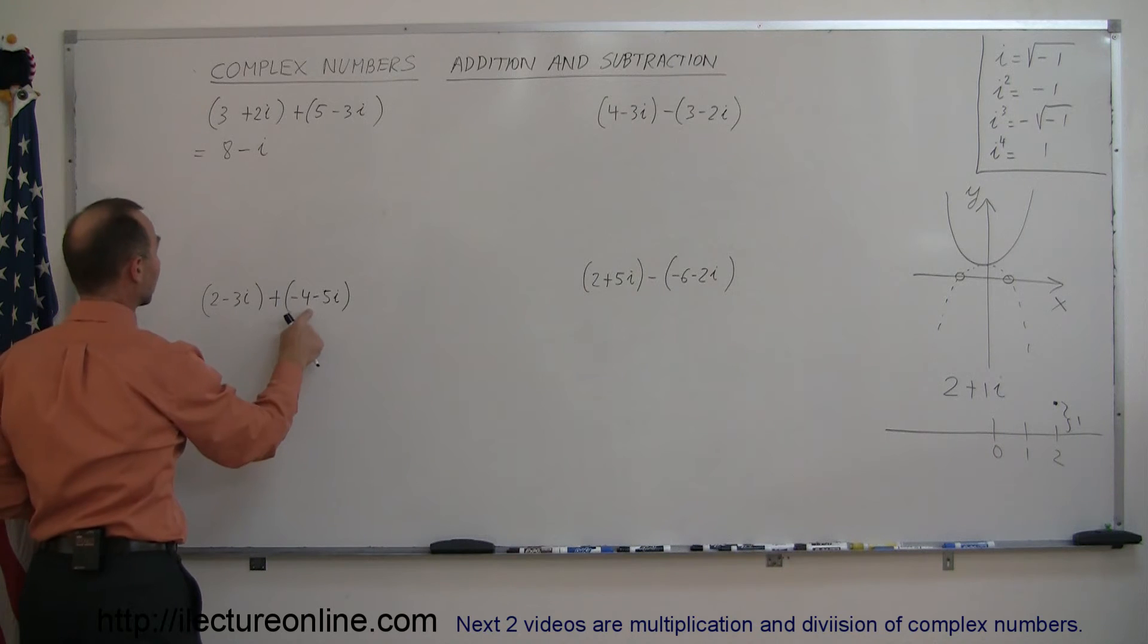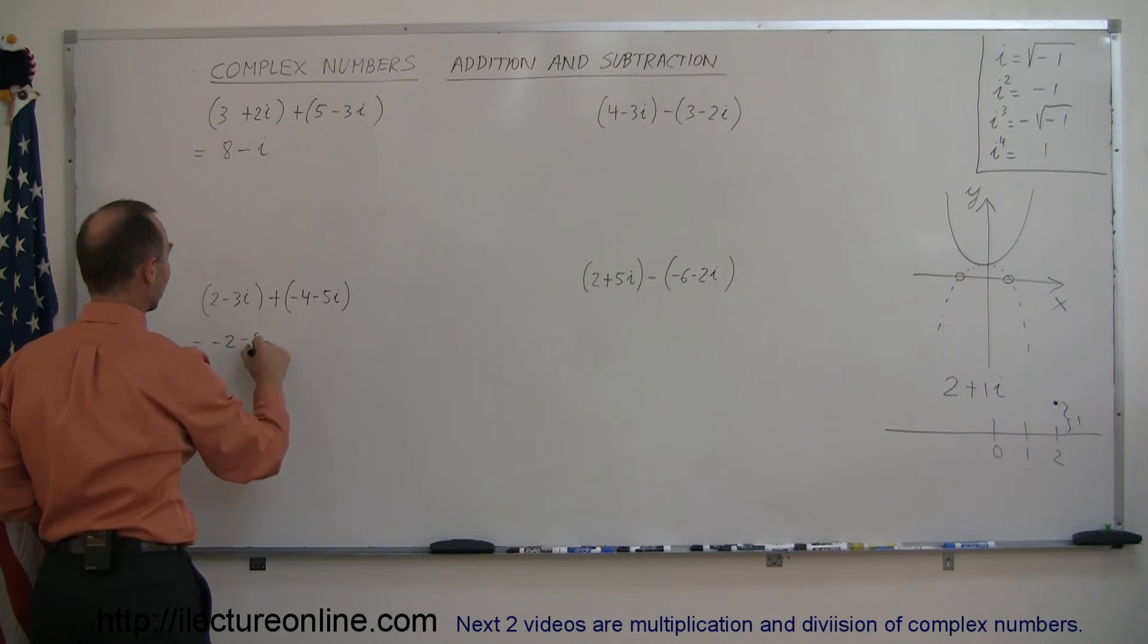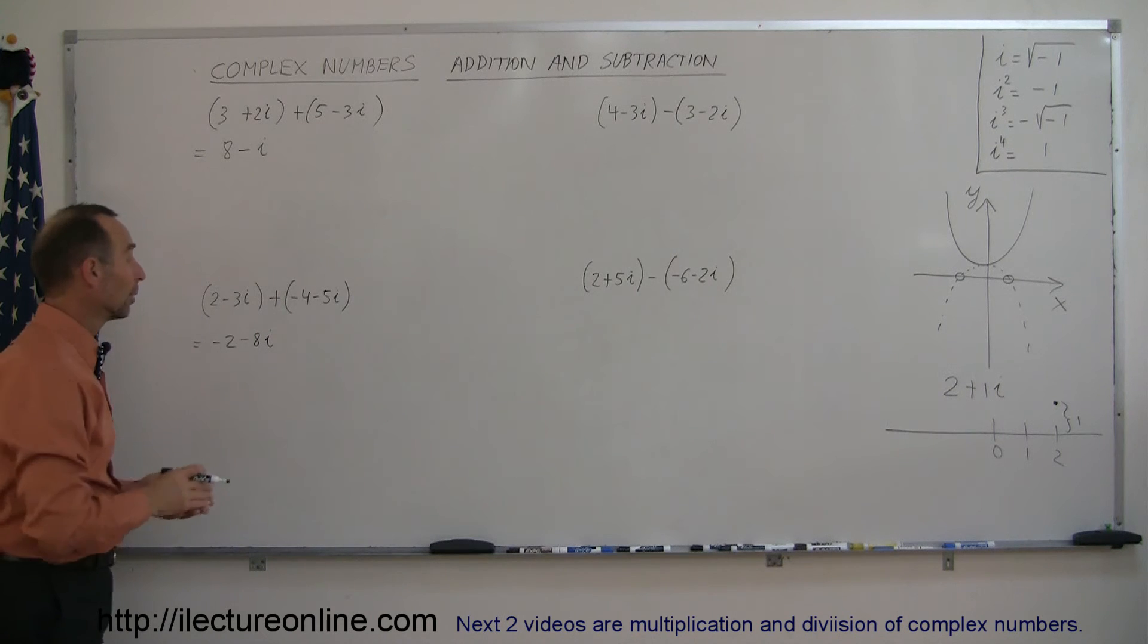Here again, you add the real parts together, so it's 2 plus negative 4, which is negative 2, and minus 3i plus minus 5i is minus 8i. So simply add the real parts together and add the imaginary parts together.